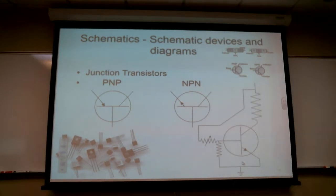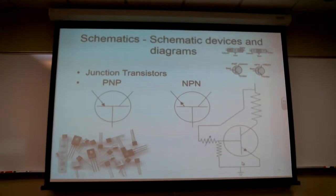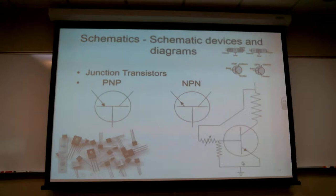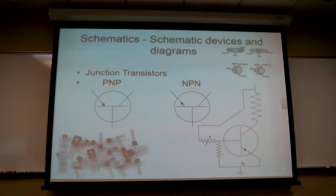With each transistor there's a thing called gain. What that does is tell you for every electron that travels through the base, how many electrons travel from the emitter to the collector. If it's got a gain of 10, I'm going to let 10 electrons travel. Or a gain of 20, or a gain of 40.